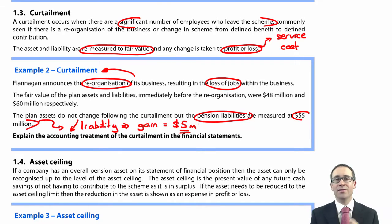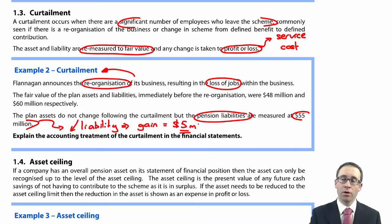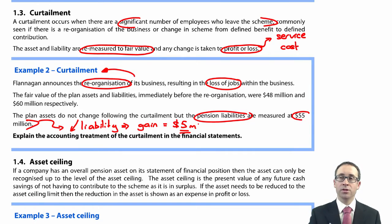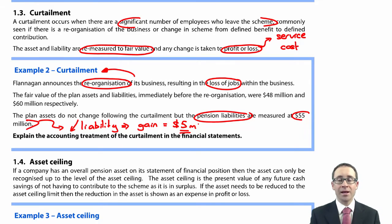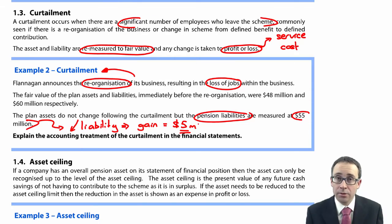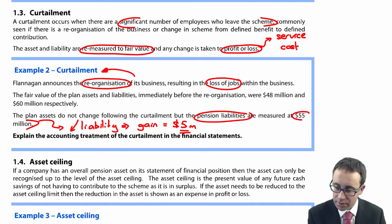A nice big gain of five million dollars as part of the reorganisation. As I said, unlikely to happen in reality. In reality, normally you re-measure the liability and the value goes up, because you need to pay the employees more to compensate for their loss of job, or to compensate them for moving to a less beneficial, more risky pension scheme — the defined contribution. That's it — nothing much to these bits of the syllabus.